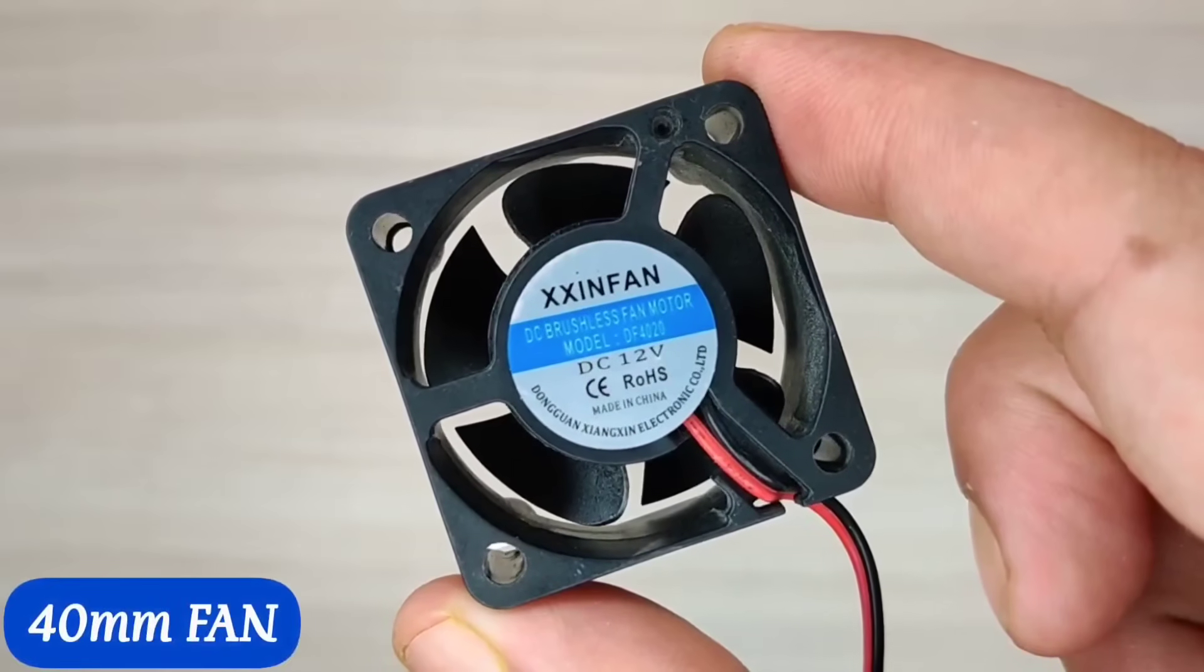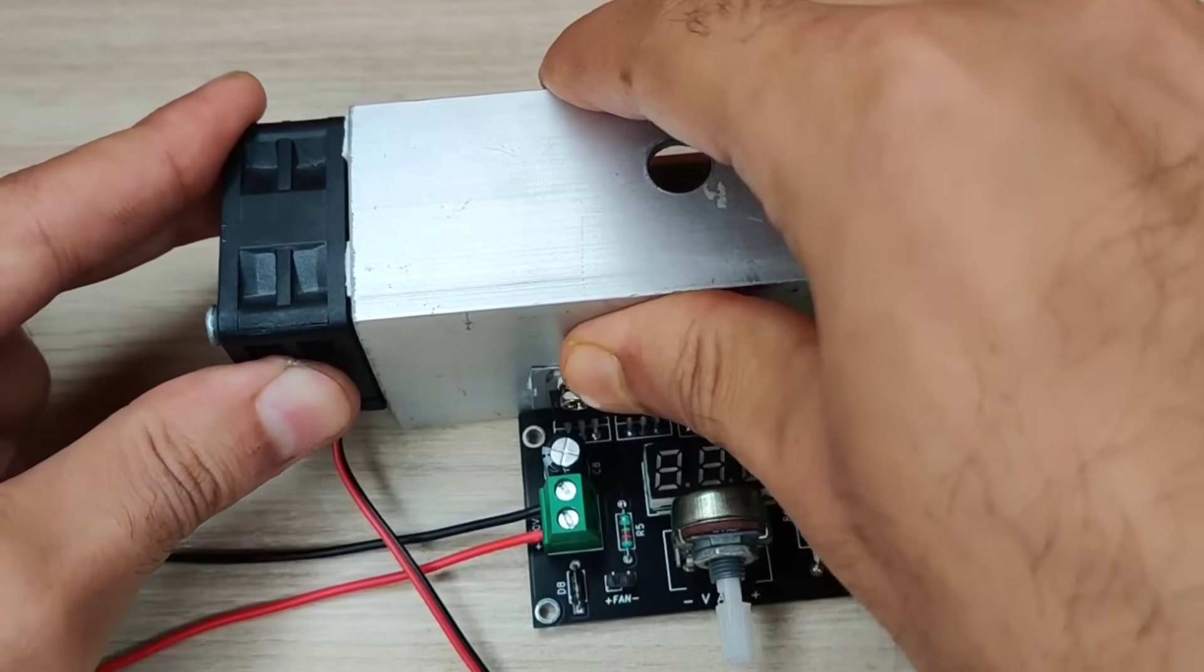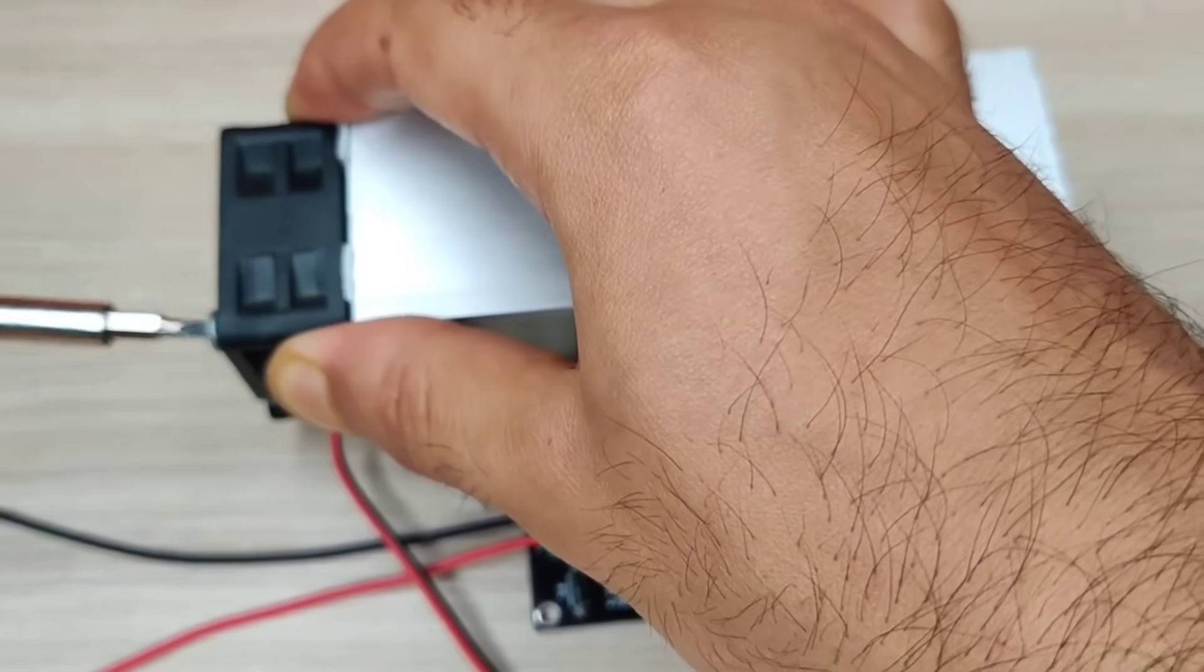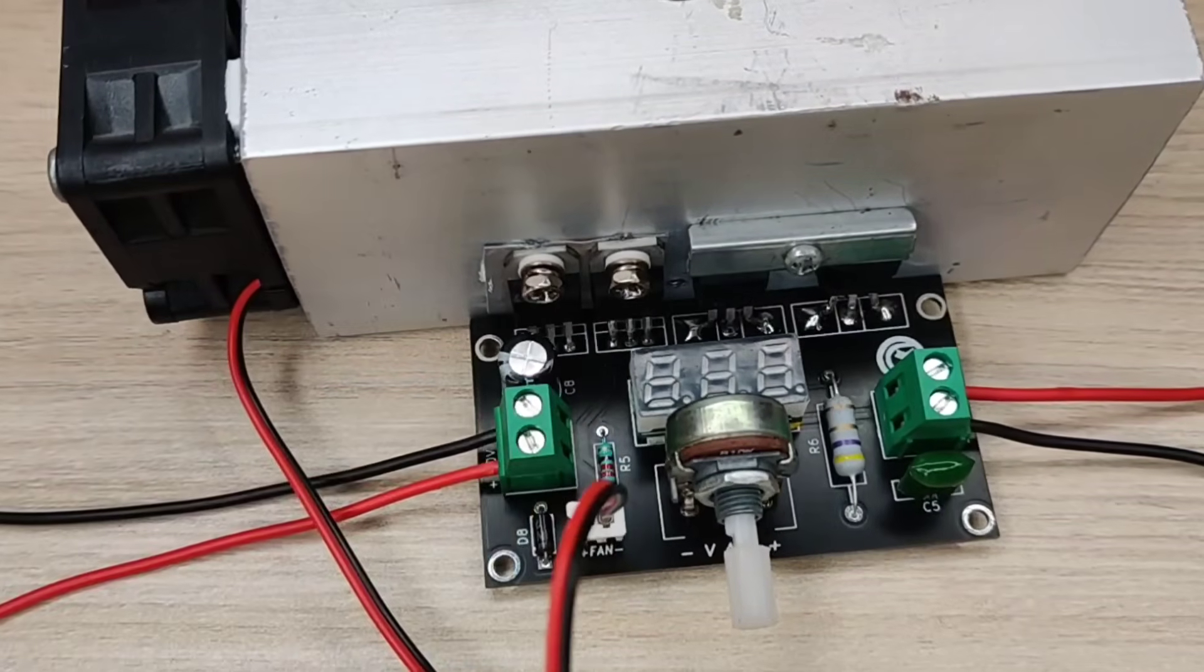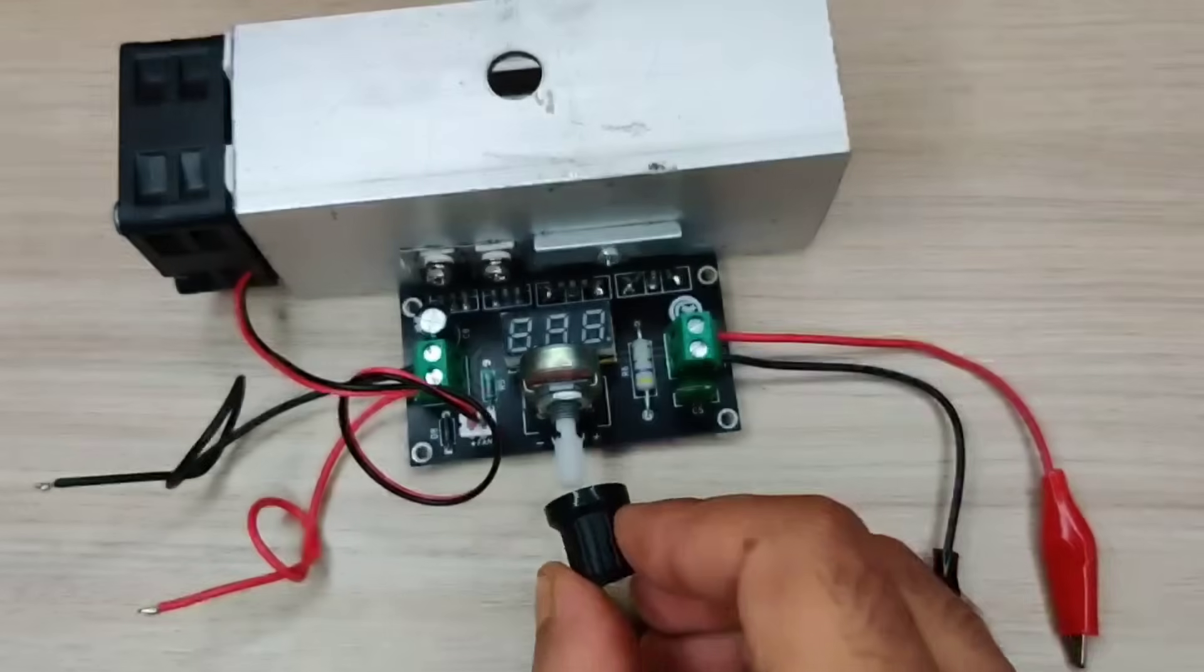I used a 40mm cooling fan for the heatsink, and of course add a knob to the potentiometer.